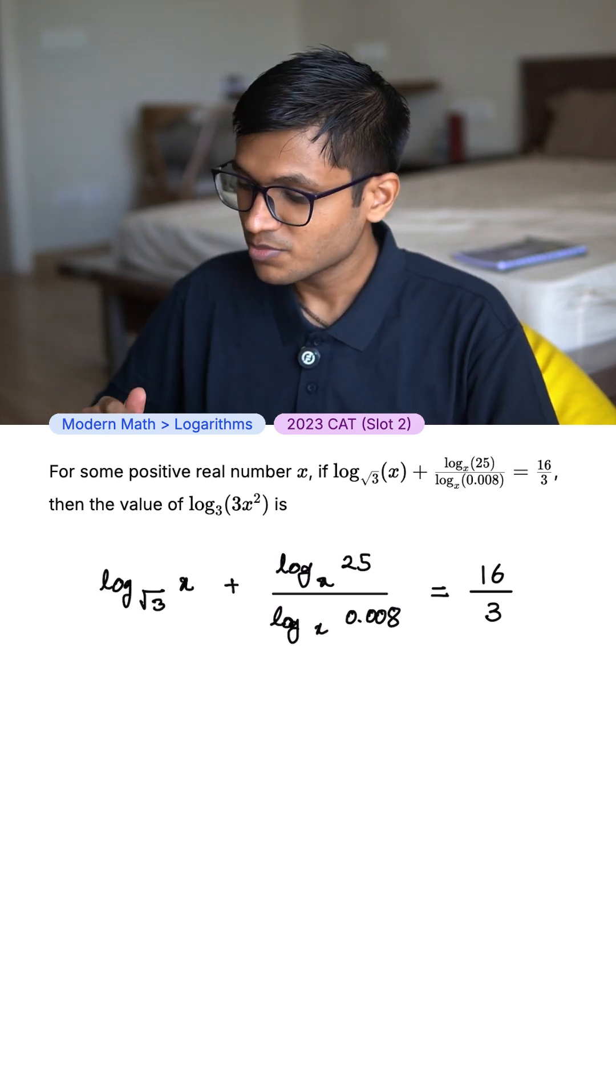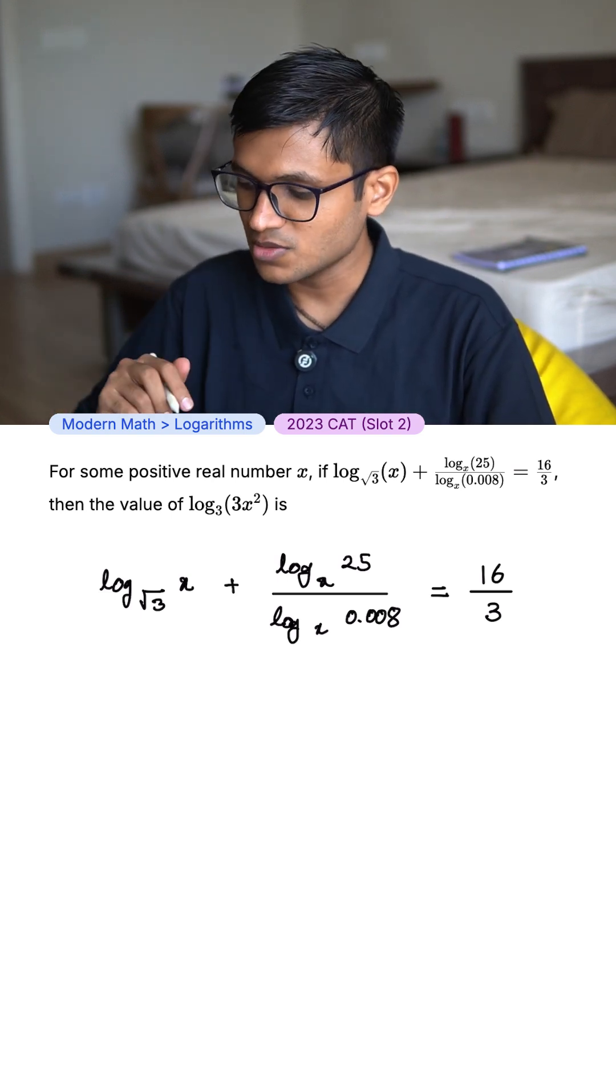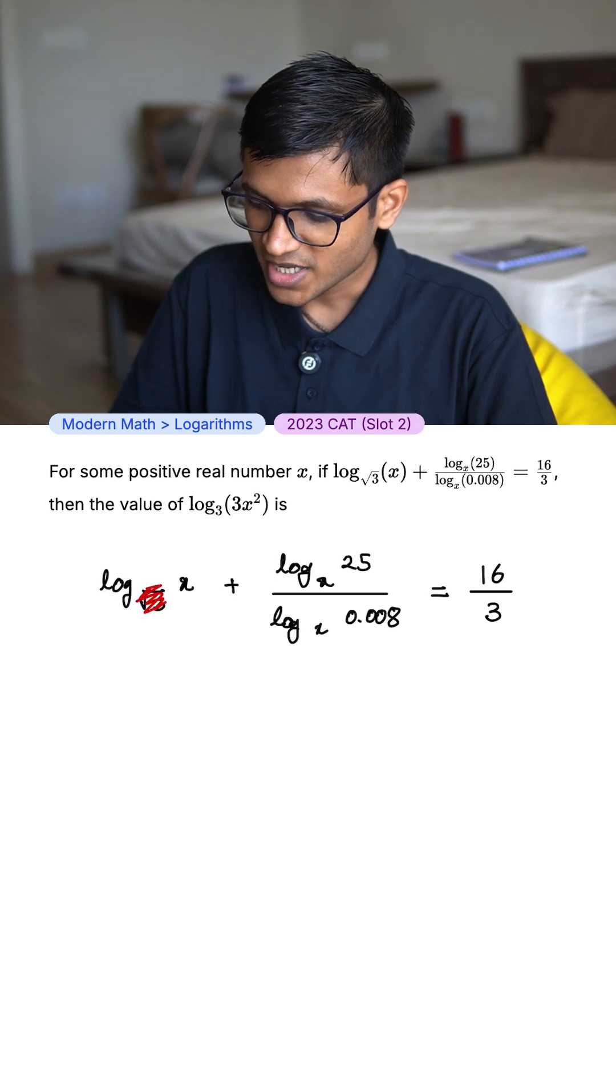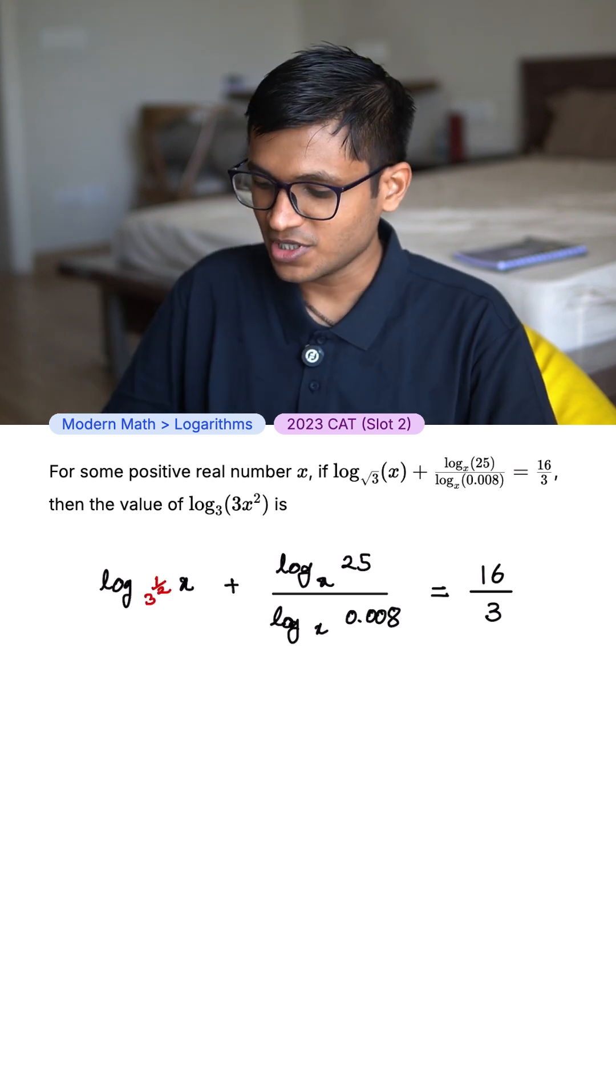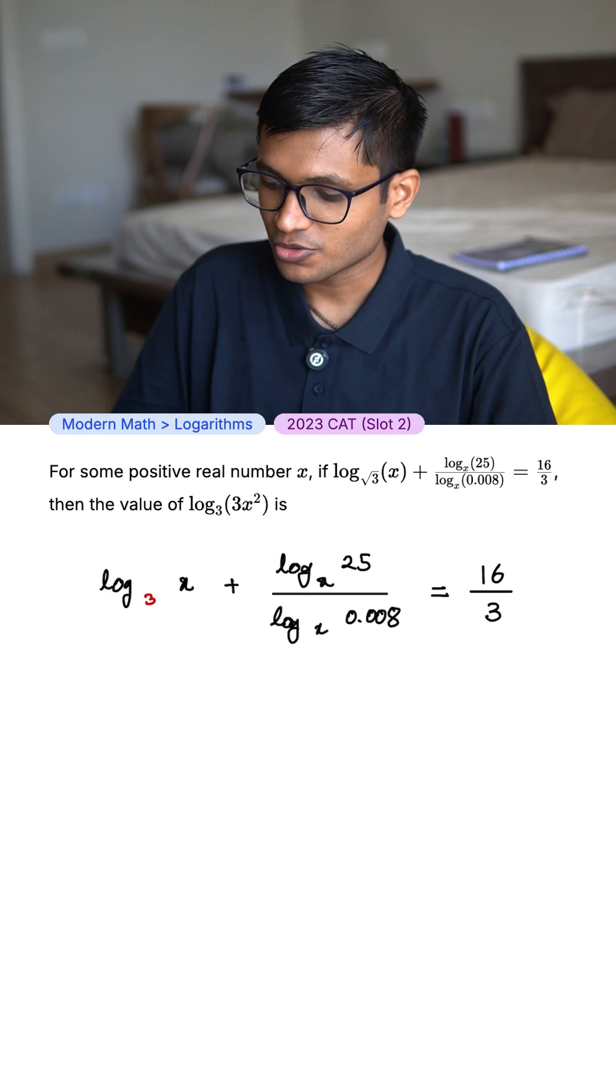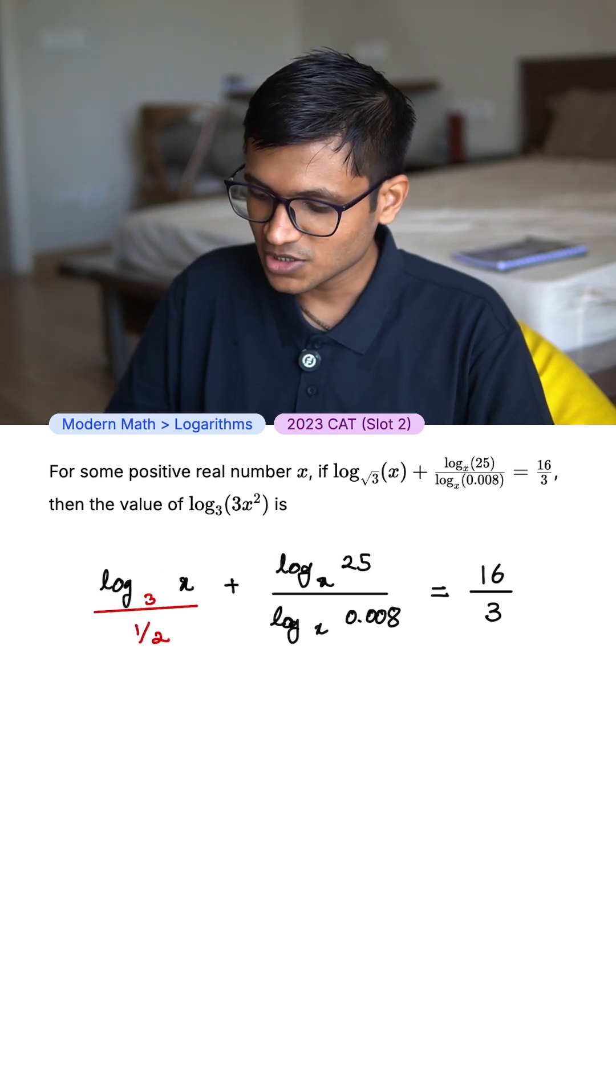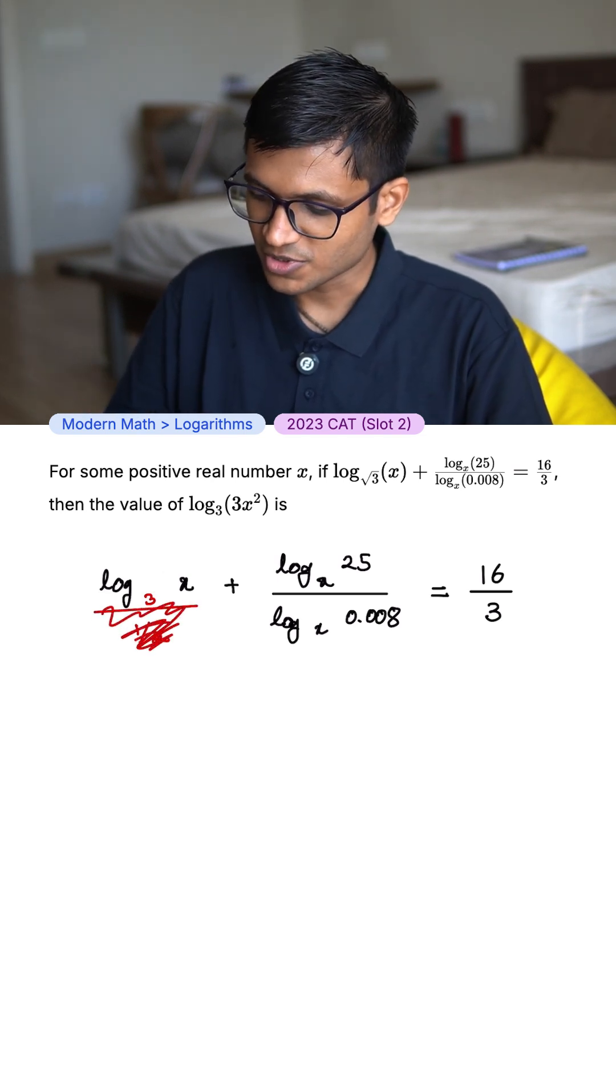Log x base root 3 plus this thing is equal to 16 by 3. Square root of 3 can be written as 3 to the power half. Any exponent on a base can be brought to the denominator. The fraction in the denominator will be a reciprocal in the numerator.